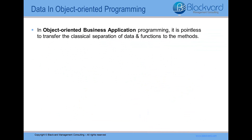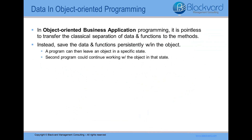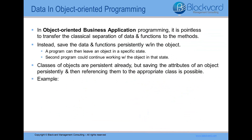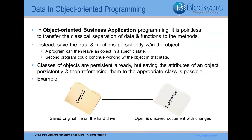However, in completely object-oriented business application programming, it is kind of pointless to simply transfer the classical separation of data and functions to the methods — that is, to work with objects using procedural programming within the objects themselves. Ideally, you could save the encapsulation of data and functions persistently within the object instead. A program could then leave an object in a certain state, and a second program could continue working on the object in that state. Classes of objects are already persistent anyways, but you need some way of saving the attributes of an object persistently and then making reference to the appropriate class. The persistent service actually allows you to do exactly that. An example of this would be a saved original file on a hard drive versus an unopened and unsaved document with changes.